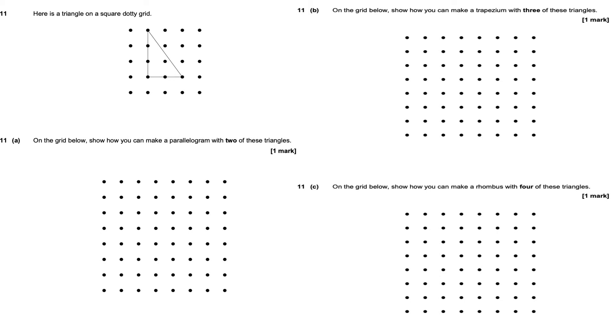It's 4 by 3 squares, and then it's going to join up diagonally. So part A: on the grid below, show how you can make a parallelogram using two triangles.